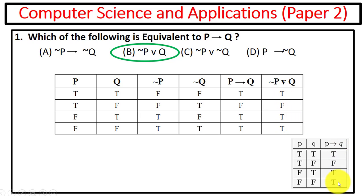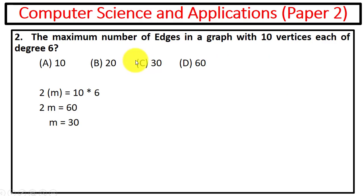Next question is the maximum number of edges in a graph with 10 vertices each of degree 6. So in order to find out the number of edges, you can use this trick: 2m equals vertices times degree, and you can see the value for this is 30.